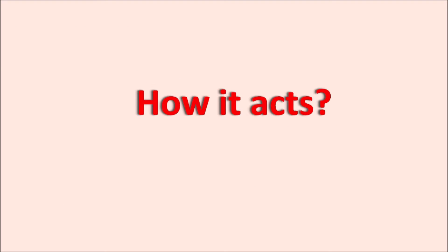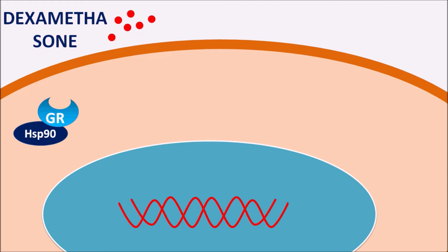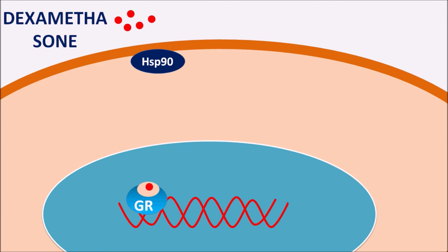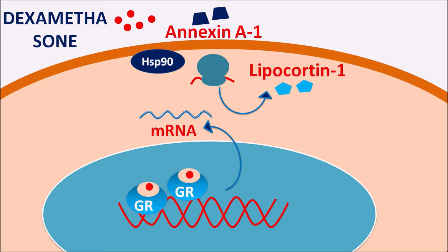Being a glucocorticoid, dexamethasone acts on glucocorticoid receptors expressed within the cytoplasm. These receptors are associated with HSP90 (heat shock protein 90). Dexamethasone crosses the cell membrane and binds to these glucocorticoid receptors in the cytoplasm. Upon binding, the receptor enters the nucleus where HSP90 is removed, and the glucocorticoid receptor undergoes dimerization. It then interacts with DNA, resulting in gene transcription that produces mRNA responsible for releasing mediators which control the inflammatory response.